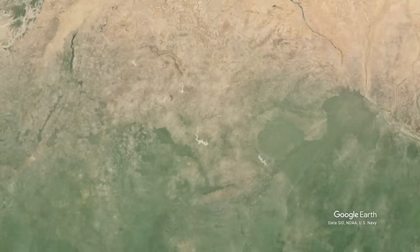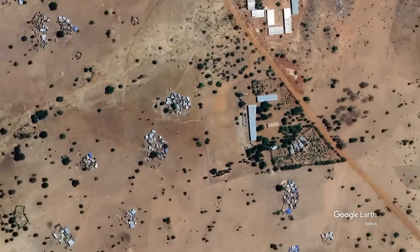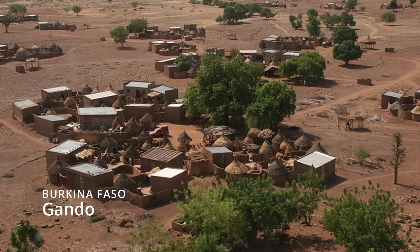Gando is a small village in Burkina Faso and has a hot, semi-arid climate. It experiences high temperatures during the year, often exceeding 35 degrees Celsius in the hottest months of the year.